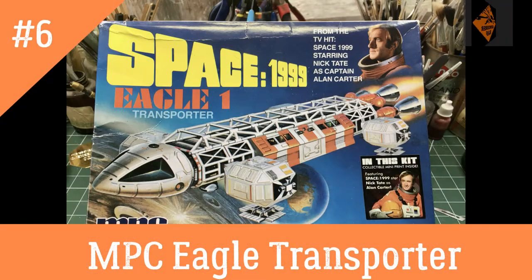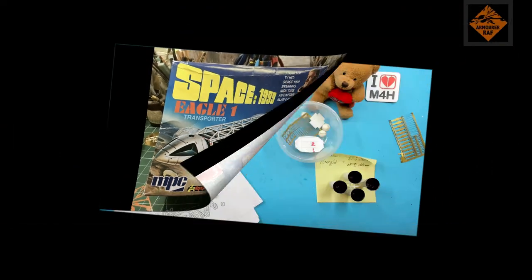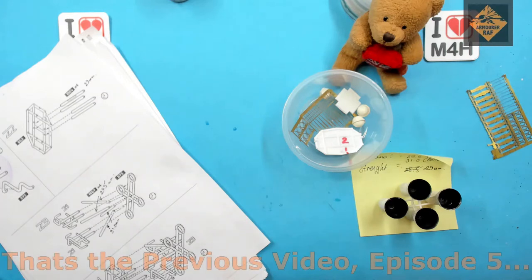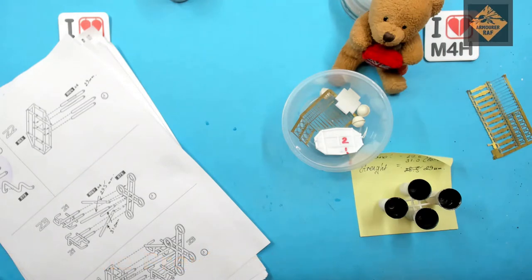Hello, I'm the Budget Modeler and welcome to episode 6 of my Space 1999 Eagle One Transporter build. First, let me apologize for not getting the video out sooner. I was having real bad problems saving the file from my video editing software. It took the company five days to get back to me. Anyway, less of that, let's crack on with the build.